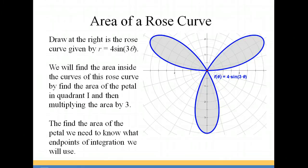We're going to do this by finding the area of one petal and then multiplying it by 3. We're going to concentrate on the petal here in quadrant 1. And in order to do that, we need to figure out what the endpoints of integration are for that particular petal.